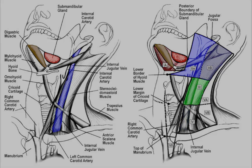Level 2 and level 3 are separated by a horizontal line drawn at the inferior margin of the hyoid bone. Level 3 and level 4 are separated by another horizontal line drawn at the inferior margin of the cricoid cartilage.